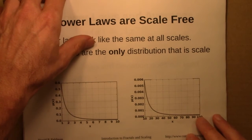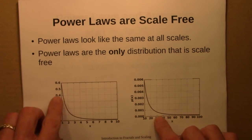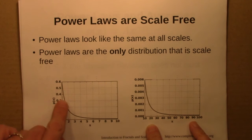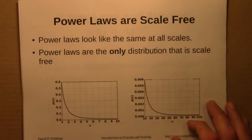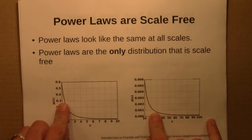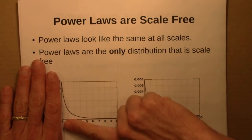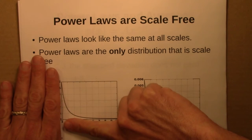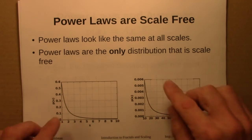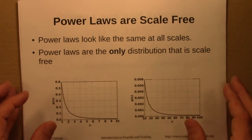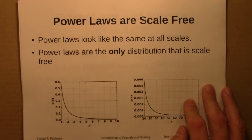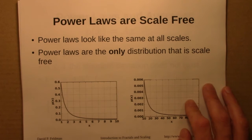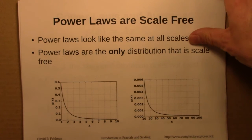Power laws are also scale-free. One way to see that is to plot a power law on different scales — we see the same sort of shape. This is another way of saying that power laws don't contain a scale; there's no clue as to scale. If I removed the labels from the axis, you wouldn't be able to figure out what they were, even if you knew what the power law was. Additionally, I argued that power laws are the only distribution that's scale-free: if we see scale-free behavior, we know there has to be a power law, and vice versa.